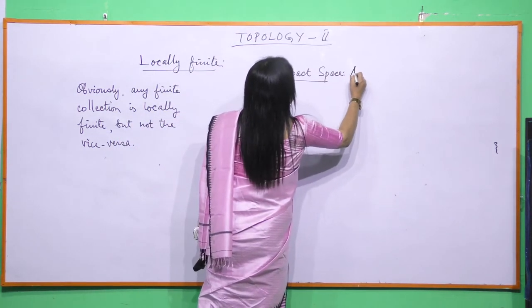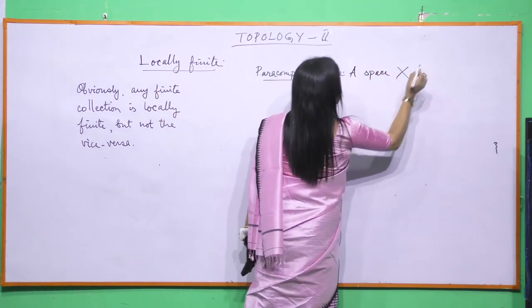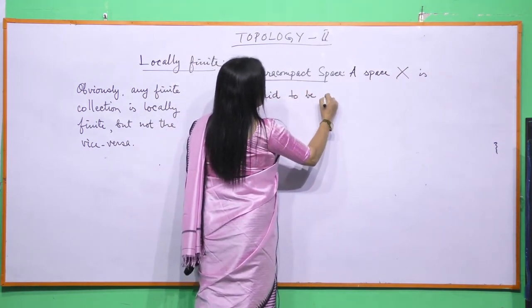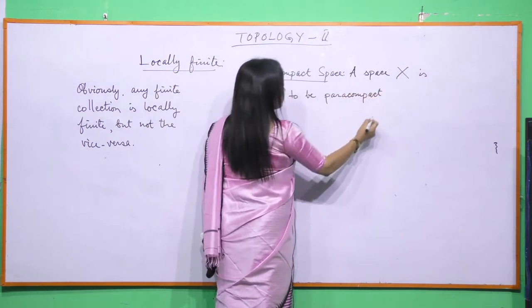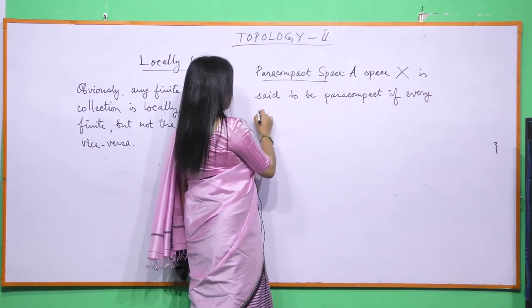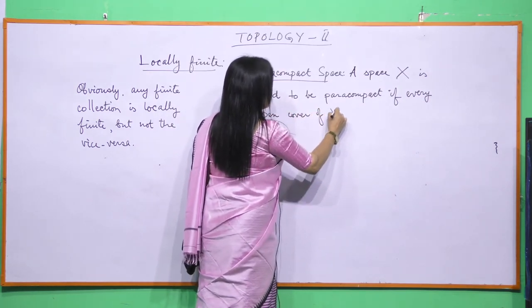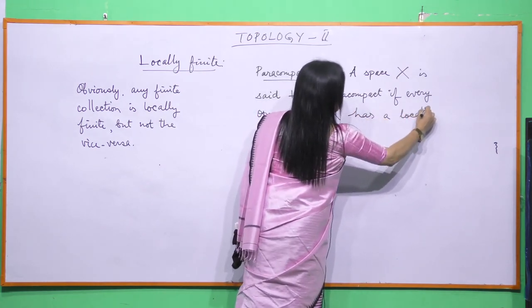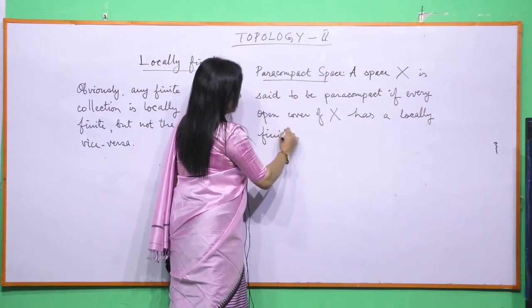let me define a paracompact space. A space X is said to be paracompact if every open cover of X has a locally finite open refinement.